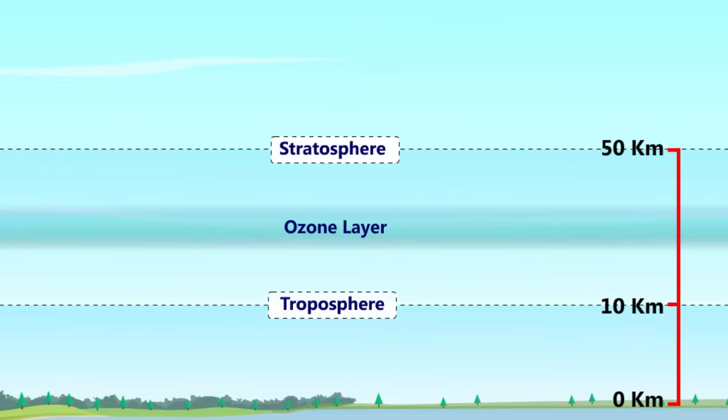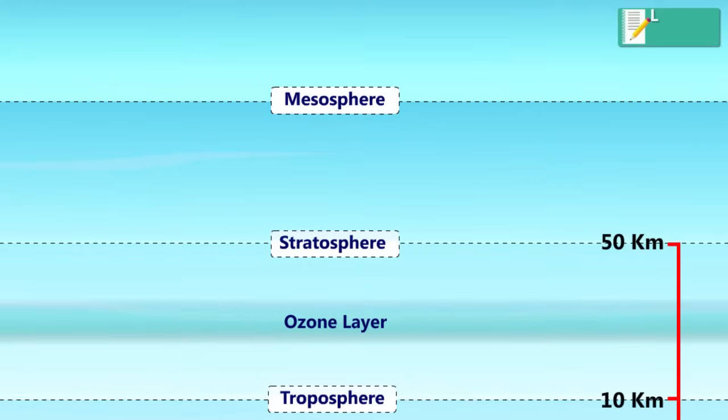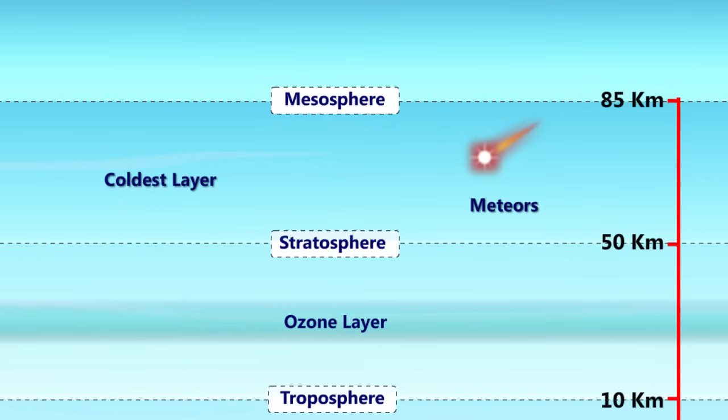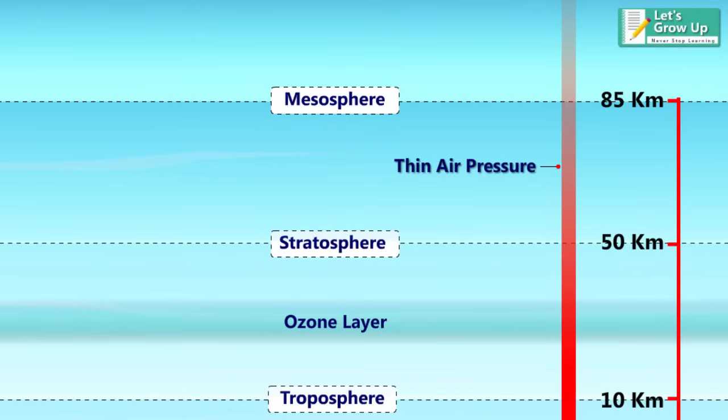The third layer of the atmosphere is the mesosphere. It extends upward to a height of about 85 kilometers, 53 miles, above our planet. Most meteors burn up in the mesosphere. Unlike the stratosphere, temperatures once again grow colder as you rise up through the mesosphere. The coldest temperatures in Earth's atmosphere, about minus 90 degrees Celsius or minus 130 degrees Fahrenheit, are found near the top of this layer. The air in the mesosphere is far too thin to breathe. Air pressure at the bottom of the layer is well below 1% of the pressure at sea level and continues dropping as you go higher.